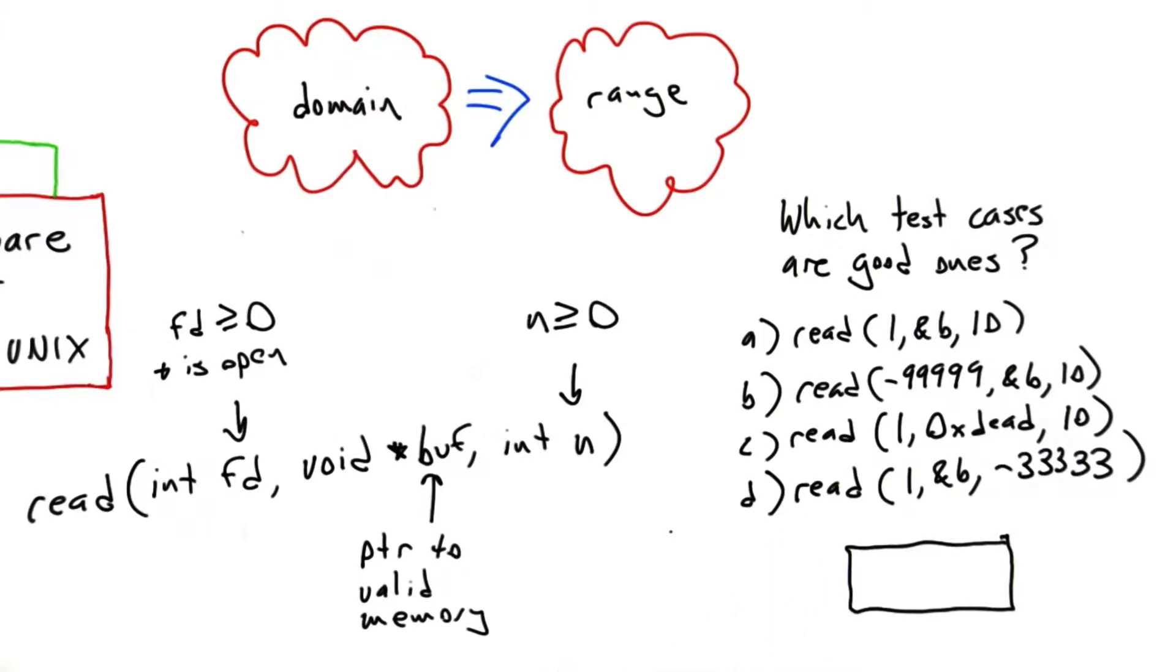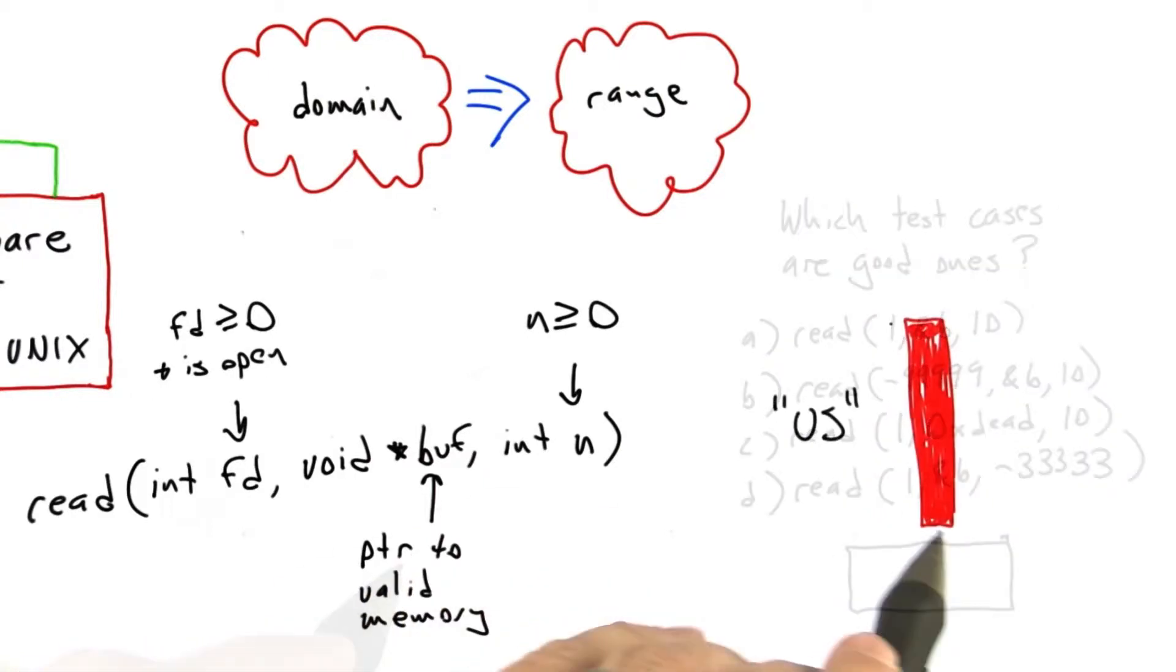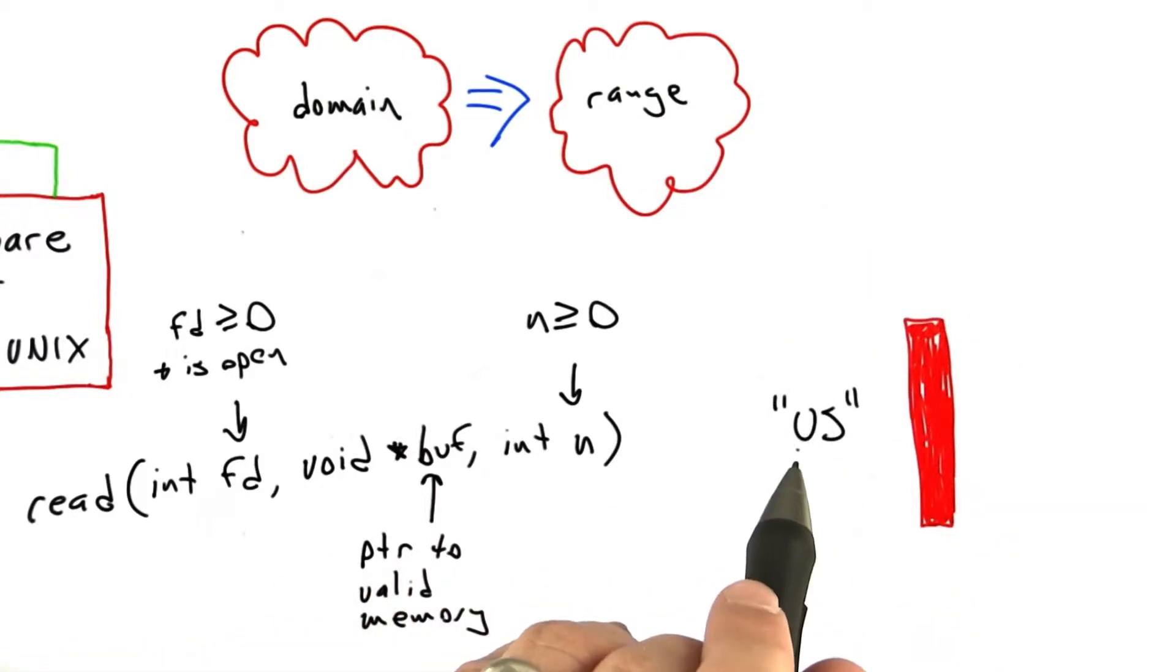And it turns out that there's a really good reason for this. The operating system boundary is a trust boundary. On one side of the operating system boundary, we have us. We're the kernel implementers, and our job is to keep the machine running, to provide isolation between users, and to enforce all of the security policies that operating systems are designed to enforce.